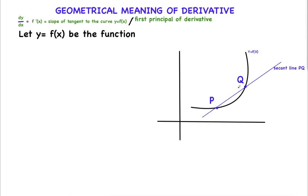What are the coordinates of point P and point Q? I will take point P as x comma f of x — its y-coordinate is f of x. For a small positive quantity h, I will take Q's x-coordinate as x plus h. So the coordinates of Q are x plus h comma f of x plus h. Point P is x comma f of x, and point Q is x plus h comma f of x plus h.